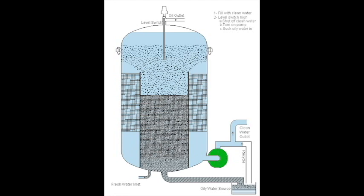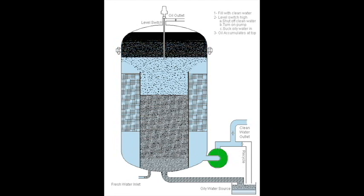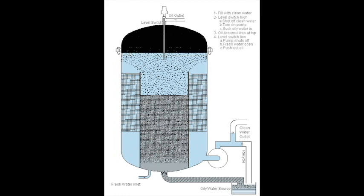Now the valves are closed and the process pump is turned on again, beginning to suck the oily water into the system. The oil again accumulates at the top of the vessel until the water level reaches the low set point again.